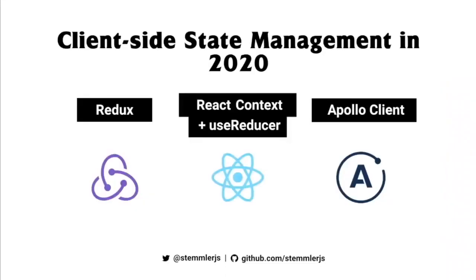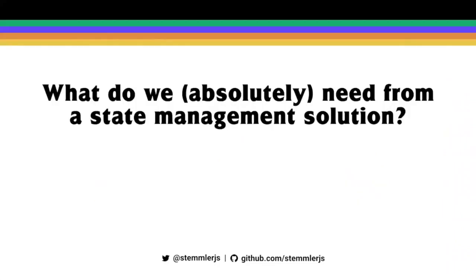If you're coming into client-side state management in 2020, we have a lot of excellent options: Redux, React Context, and Apollo Client. How do we decide which one to choose? I think in order to answer that question, we first need to ask ourselves what it is that we actually need from a state management solution.